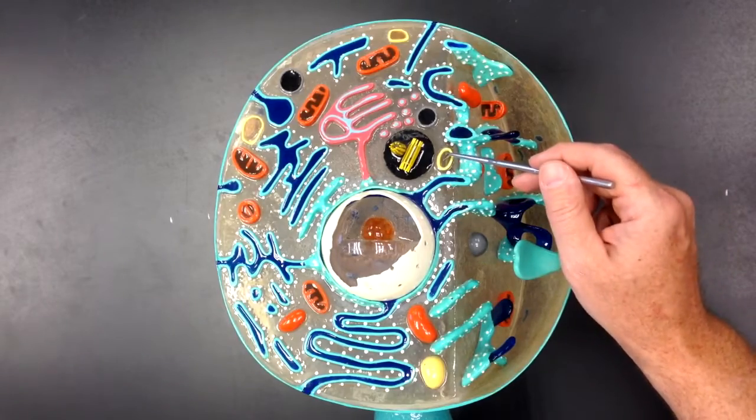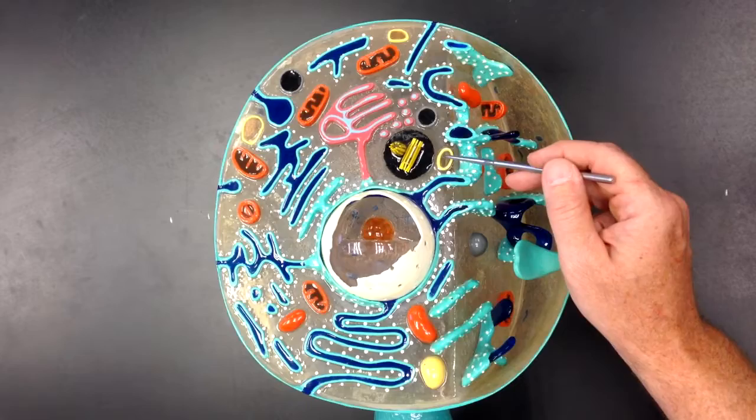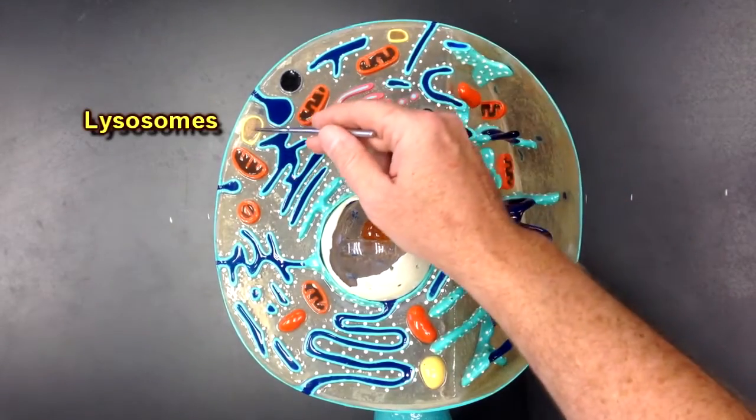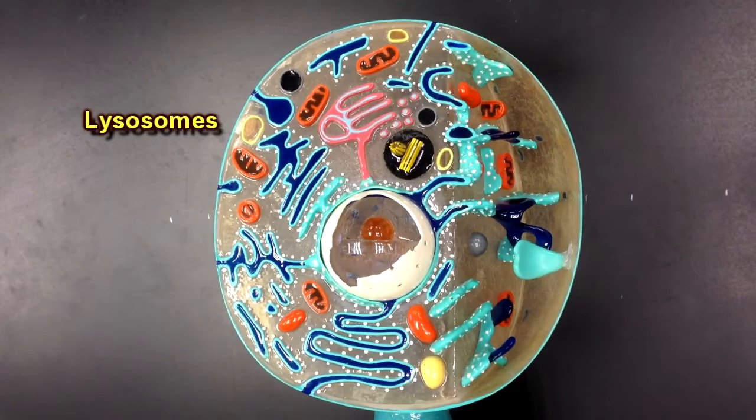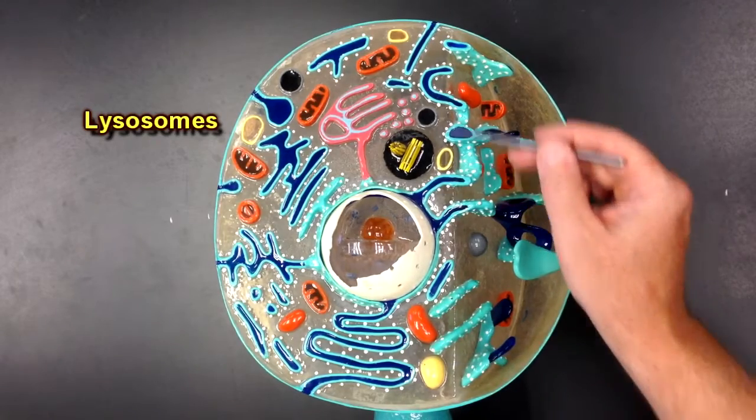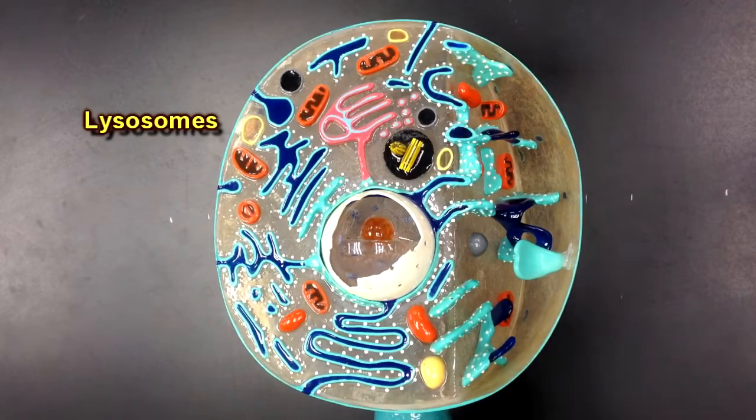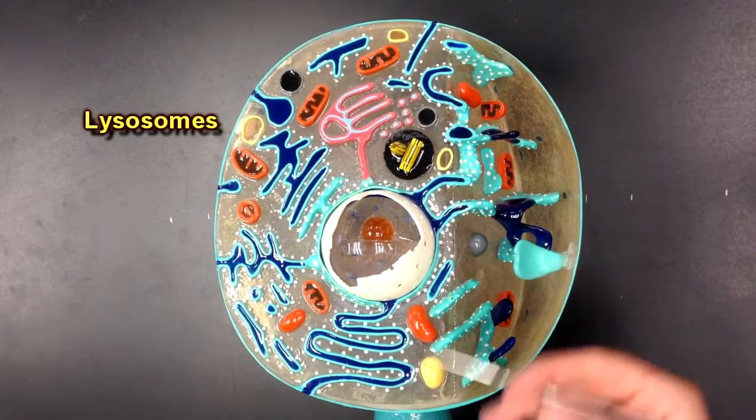We can see these yellow vesicles right here. Those yellow vesicles can be called lysosomes and those lysosomes contain enzymes that can help to digest substances that enter the cell.